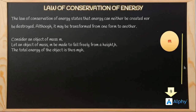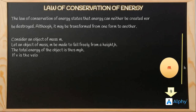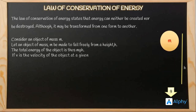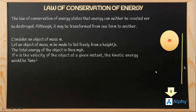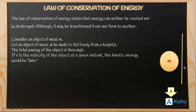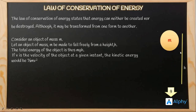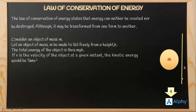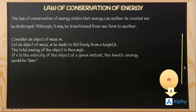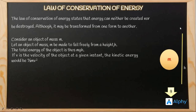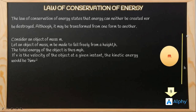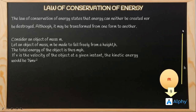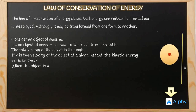Thus the total energy of the object is mgh. As it falls, its potential energy decreases and the kinetic energy increases. If v is the velocity of the object at a given instant, the kinetic energy would be half mv squared. At any instant, if the mass is falling with velocity v, the kinetic energy would be half mv squared. At the start point, since v is zero, kinetic energy is zero.